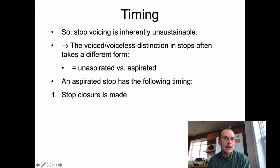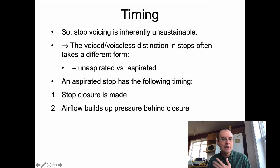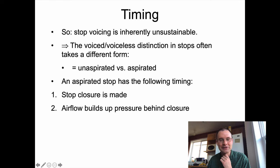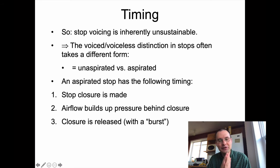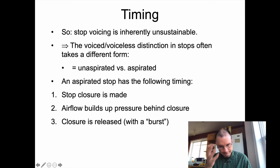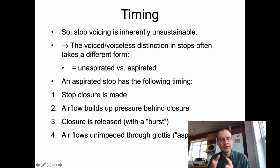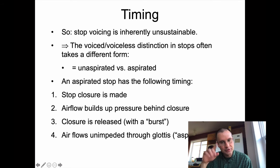An aspirated stop has the following timing: first, a stop closure is made somewhere in the vocal tract. Air pressure can build up behind the closure without necessarily creating voicing through the glottis. The closure is then released with a release burst, and because of the higher pressure built up behind the closure, air flows through very rapidly, giving you that release burst. On top of that, air flows unimpeded through the glottis for a while — this is called aspiration, like a 'huh' sound, notated in superscript.